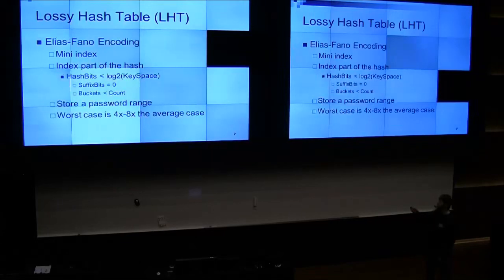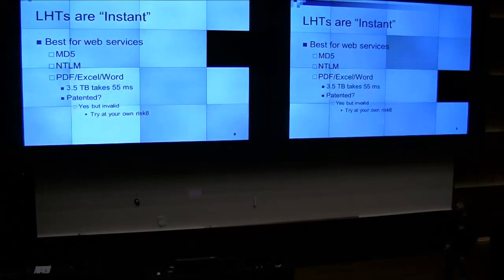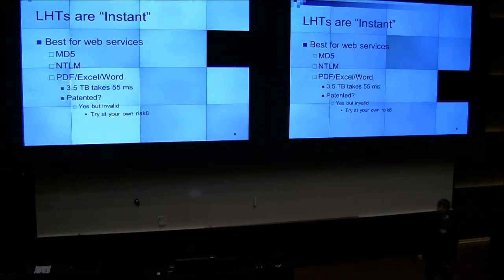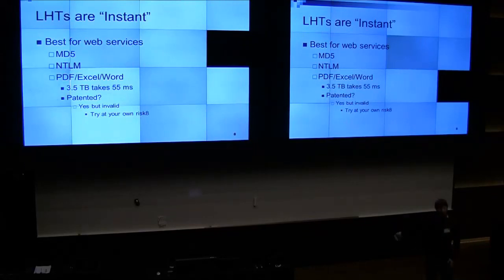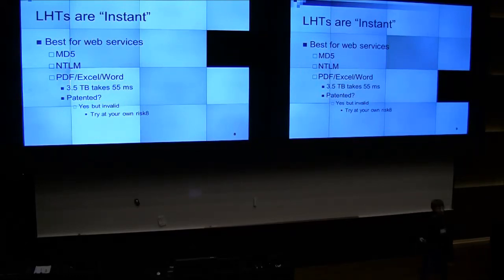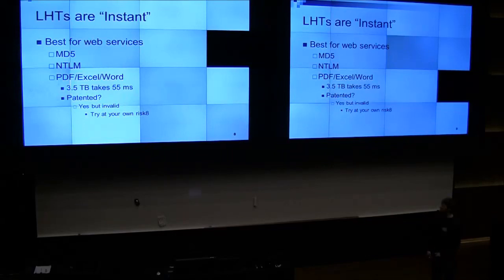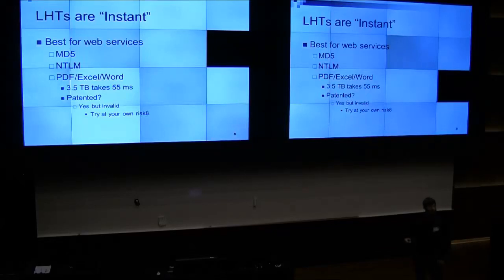But the worst case is going to be twice as high. There are also PDFs, Excel, and Word documents — the old ones that use RC4 40-bit keys. With 3.5 terabytes of disk, it would take 55 milliseconds to get the encryption key from the file.